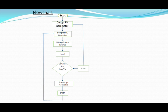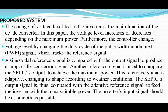Now we move to the flowchart for our block diagram. The first step is start and design, then we design the PV parameters, then we go to the voltage source inverter, then to the load — which can be a bulb or anything. After that we go to the comparator, then to the fuzzy logic controller, then to pulse width modulation (PWM), and finally to the MPPT technique, giving output to the MPPT block. From here, my colleague will explain further.